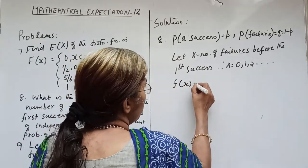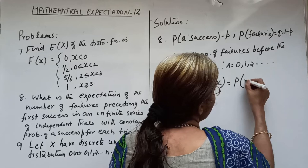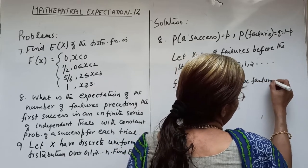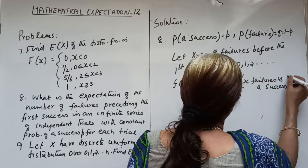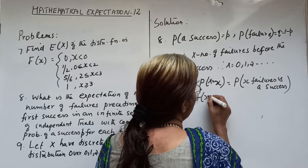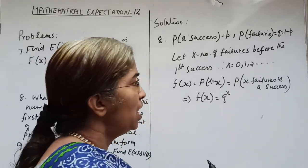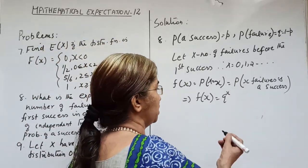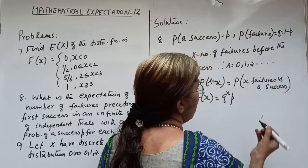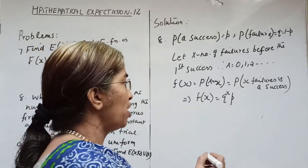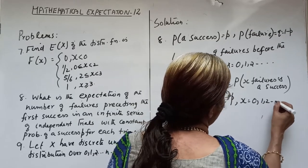The probability f(X) = P(X = x) is the probability of X failures followed by a success. By the multiplication theorem, this equals Q^X · P, where X = 0, 1, 2, ... up to infinity.